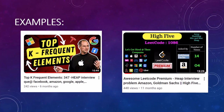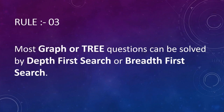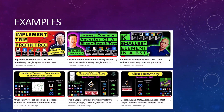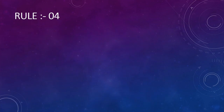Every single example for every single rule will be posted in the description. Rule number three is a pretty trivial and common rule: whenever you see any kind of graph or tree problem, most likely it can be solved using depth-first search or breadth-first search, as these are the two mechanisms to traverse any graph or tree structure. There are countless examples for this kind of problem.